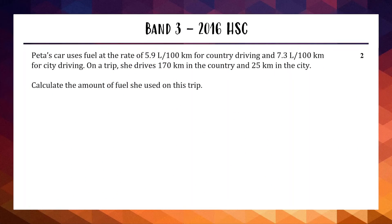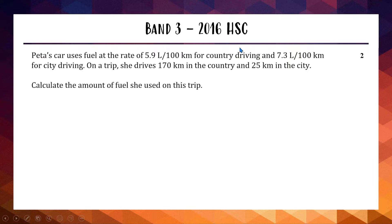Let's get right into it. Starting with a Band 3 question from the 2016 HSC involving fuel rates. We've got a car that uses 5.9 liters per 100 km in the country and 7.3 liters per 100 km in the city. For a trip, we have 170 km in the country and 25 km in the city. We need to find the total fuel used for this trip for two marks.